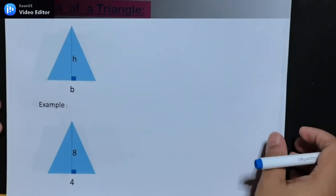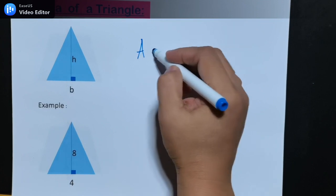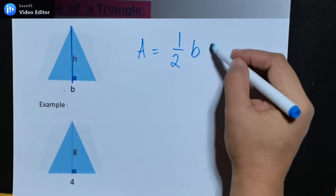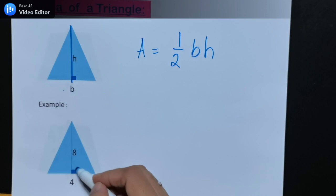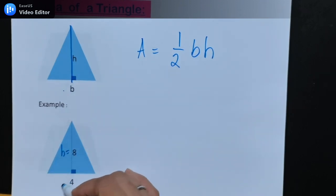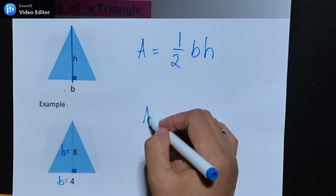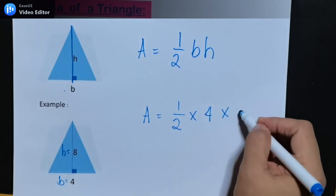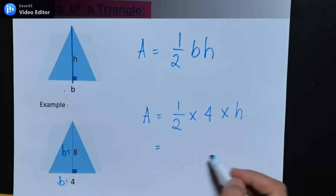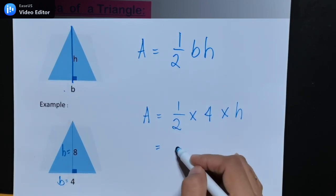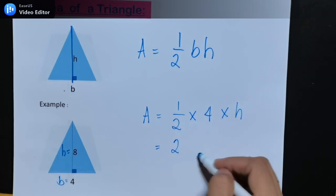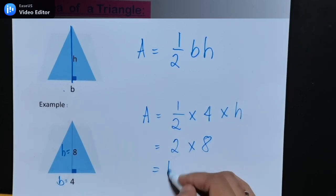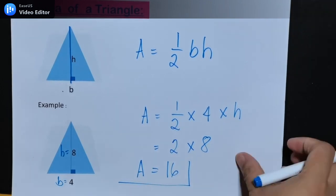Next, area of a triangle. The area of a triangle is one-half times the base times the height. From the given example, the height = 8 and the base = 4. So the area is one-half times 4 times 8. One-half times 4 is 2, then 2 times 8 is 16. So the area of this triangle is 16.